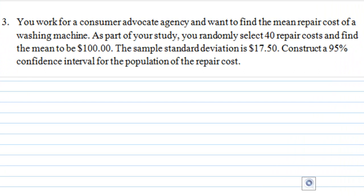This example illustrates how to construct a confidence interval for the population mean. The problem is this: You work for a consumer advocate agency and want to find the mean repair cost of a washing machine. As part of your study, you randomly select 40 repair costs and find the mean to be $100. The sample standard deviation is $17.50. Construct a 95% confidence interval for the population mean of the repair cost.